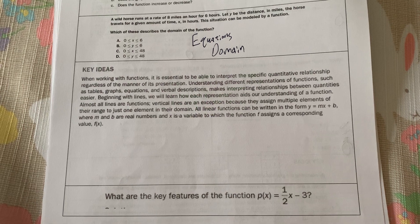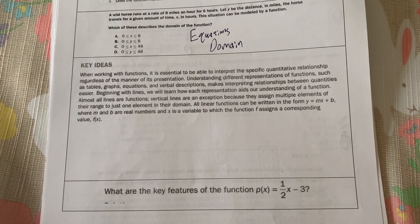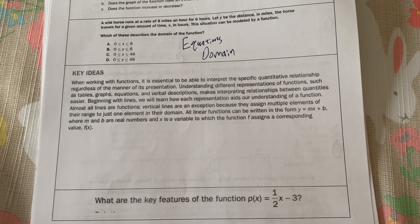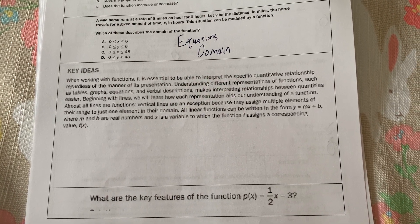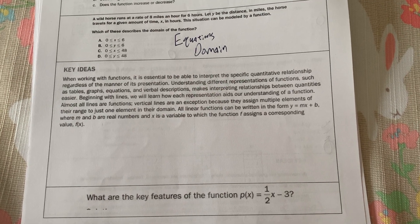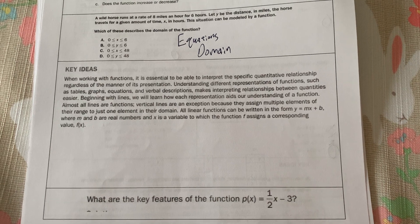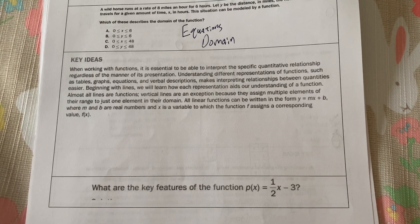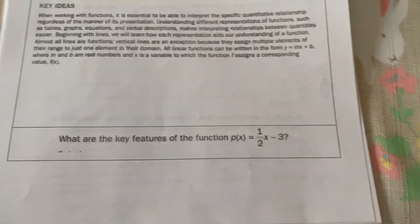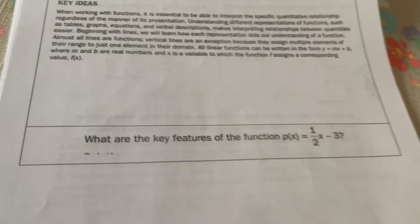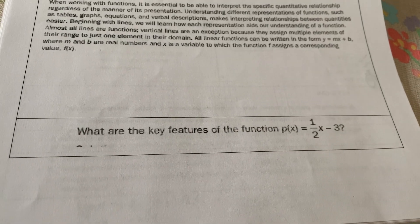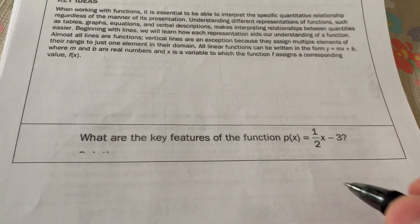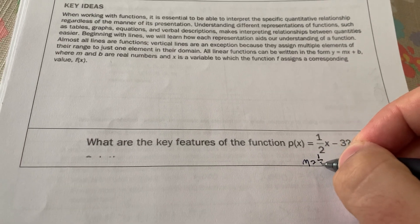A key idea about working with functions is interpreting the specific quantitative relationship regardless of the form or presentation — basically, what is the function trying to tell you? Key features can be found from a graph, such as domain, range, x-intercept, y-intercept, things like that. They can also be found from just the equation. So what are the key features of this function? It's written in slope-intercept form, so the slope m is one half.